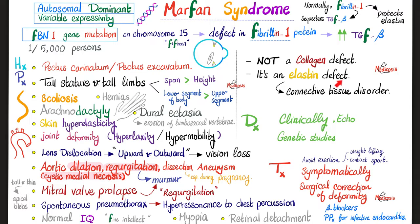Contrary to popular belief, Marfan syndrome is NOT a collagen defect — it's an elastin and fibrillin defect. Osteogenesis imperfecta, scurvy, and Ehlers-Danlos syndrome are collagen defects. Marfan is a connective tissue disorder but not a collagen defect, so you cannot specify a defective collagen type (type 1, 2, 3, 4, 5, etc.) — the answer is none of these.